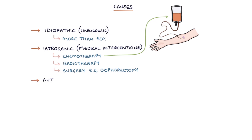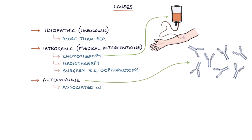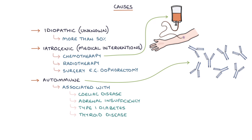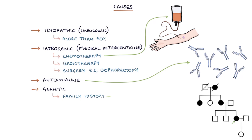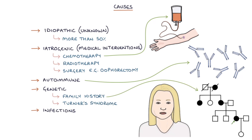It can be autoimmune, possibly associated with celiac disease, adrenal insufficiency, type 1 diabetes, or thyroid disease. It can be genetic, where there's a positive family history or conditions such as Turner syndrome. And it can be caused by infections such as mumps, tuberculosis, or cytomegalovirus.